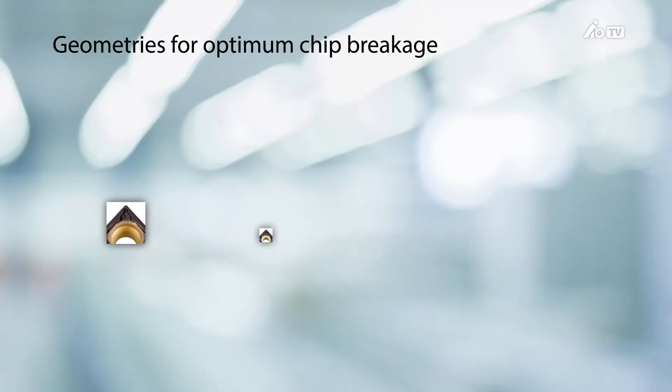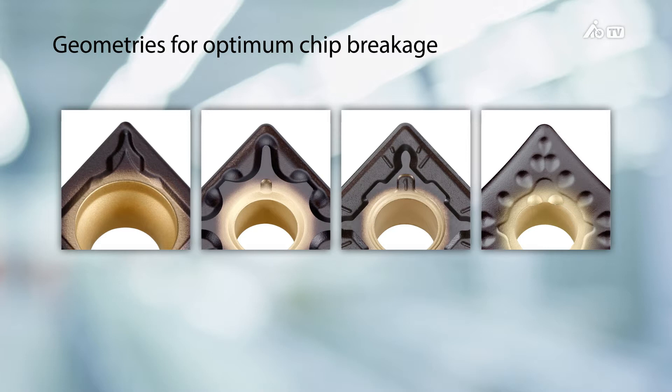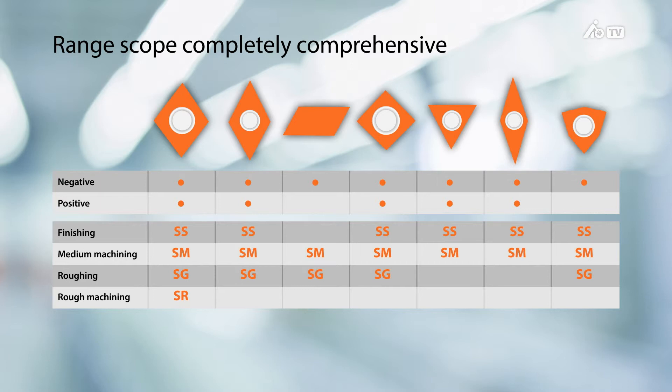And now to the scope of the range. We offer a deep and wide range, from finishing, via medium machining, right through to roughing and coarse machining. As you would expect from the Hoffman Group, all the popular types are already available from stock.